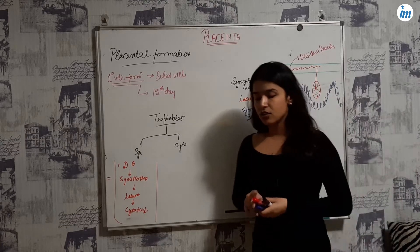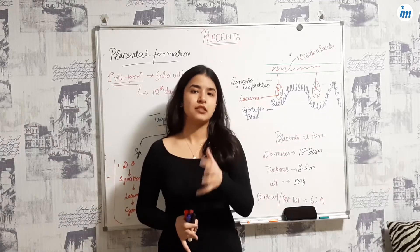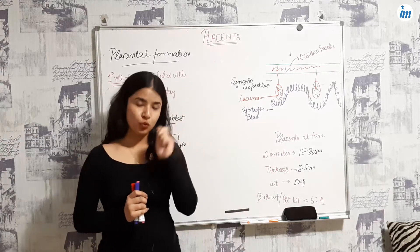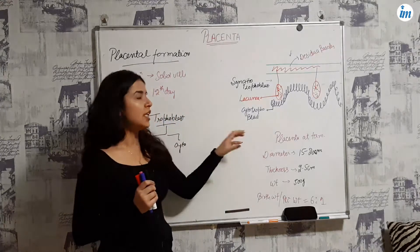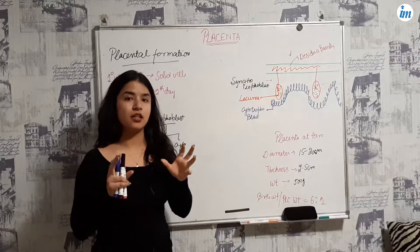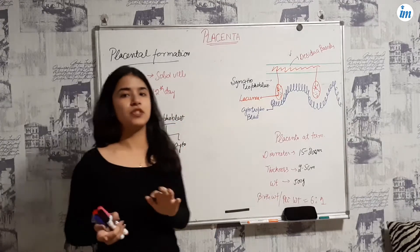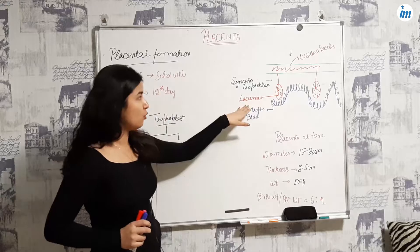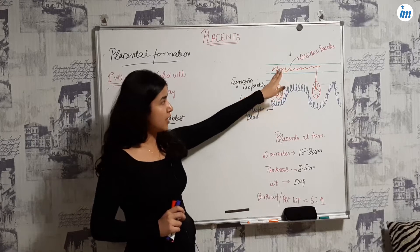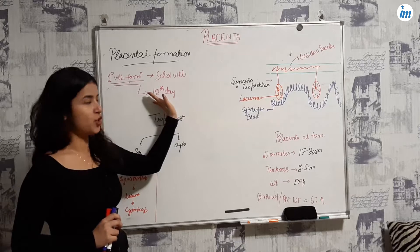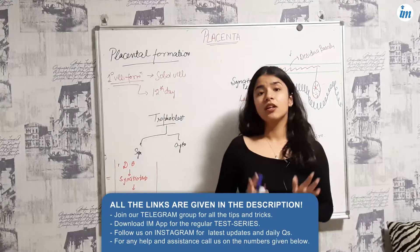If asked: when is uteroplacental circulation established? The answer is at day 12, or 12 to 15 days, because that is when primary villus formation occurs and maternal blood fills the lacunae.